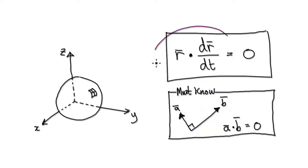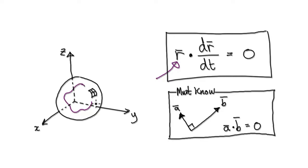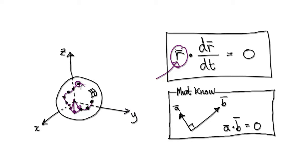So let me explain this statement. Suppose you have a vector of constant magnitude. Imagine you've got a sphere, and a particle is moving around on its surface. Each step of the way you always know its position vector — that's R. Another second later the position vector is there, and so on. The magnitude is constant because the radius of the sphere is always the same.